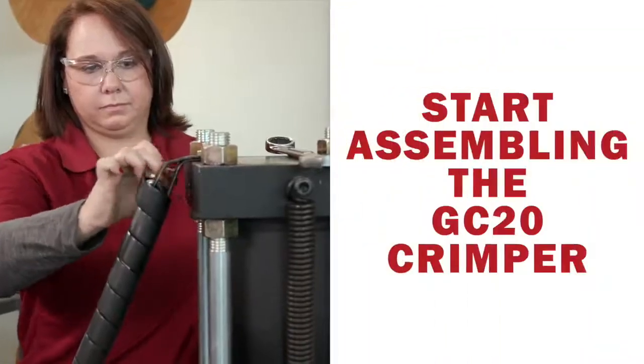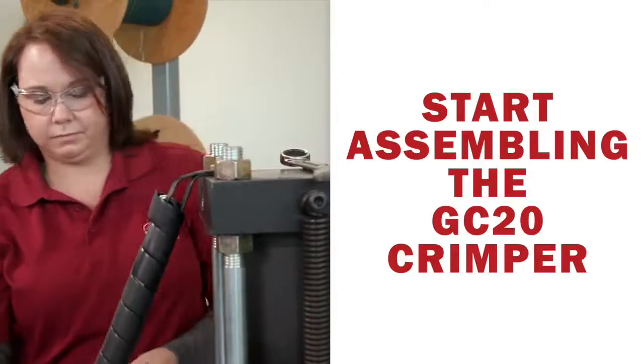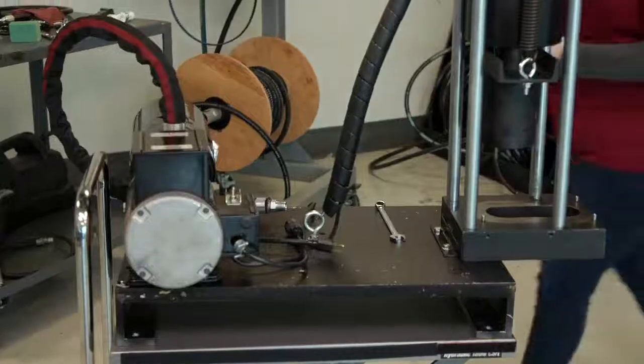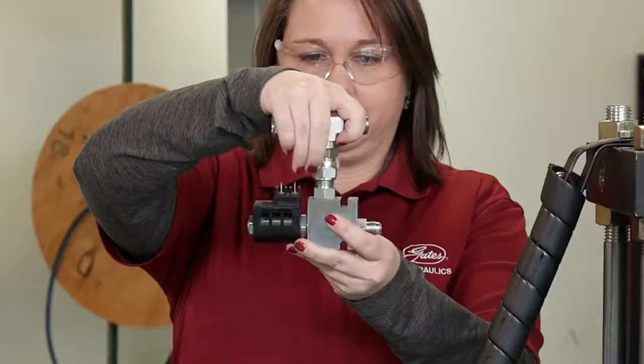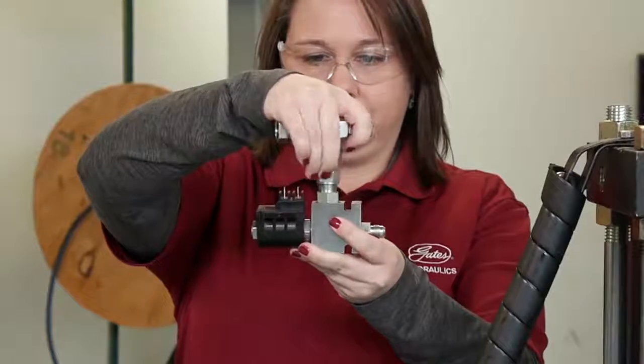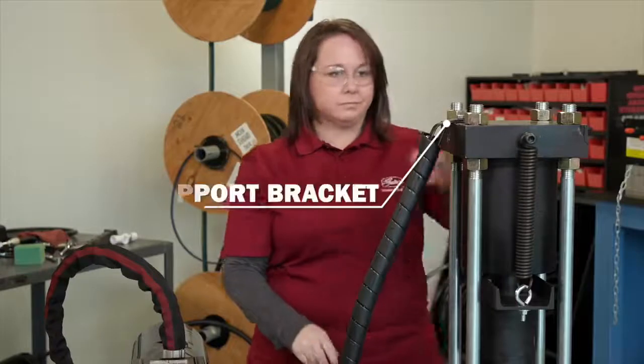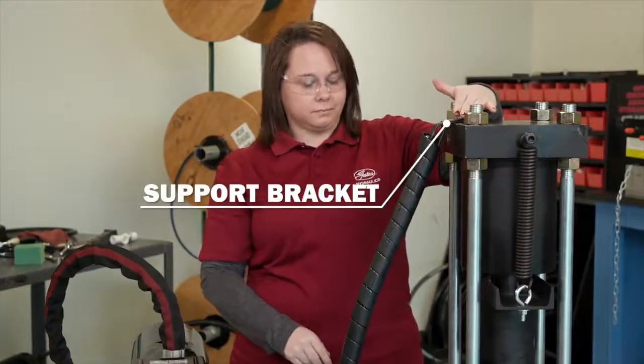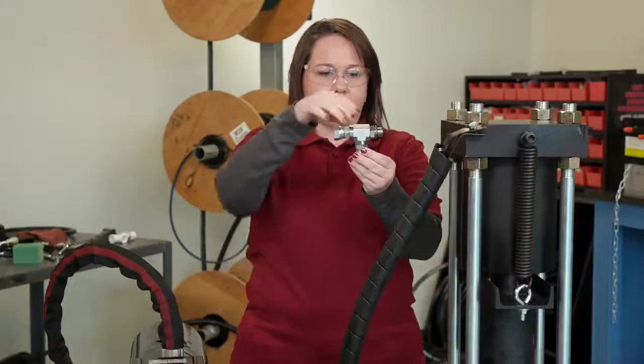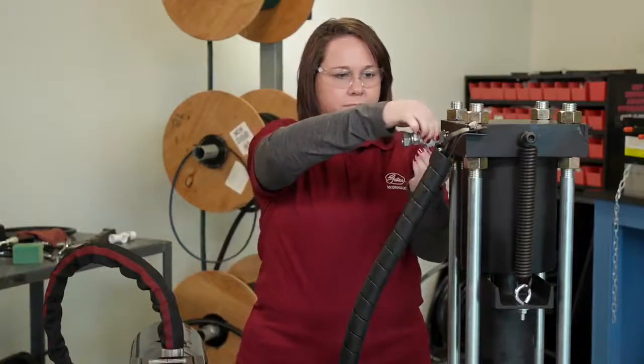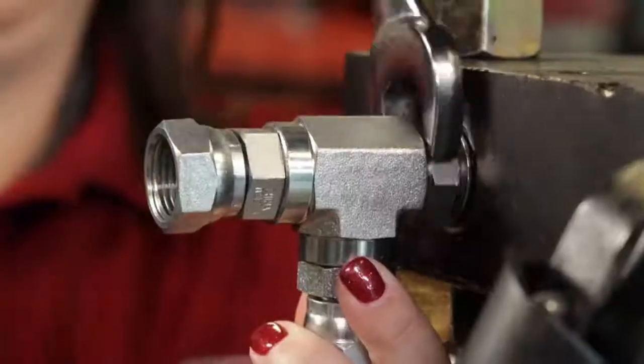Now that the components are removed, you can begin to assemble your new GC-20 with Gates Cortex Intelligence. You'll begin by installing the preassembled solenoid block at the rear of the crimper. First, separate the loosely connected adapters between the T adapter and the solenoid. You may need to remove the support bracket for clearance. Then install the T adapter to the top plate and orient so the bottom of the T is facing down. Tighten.